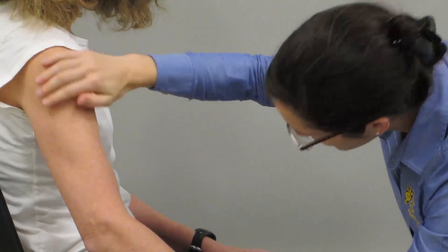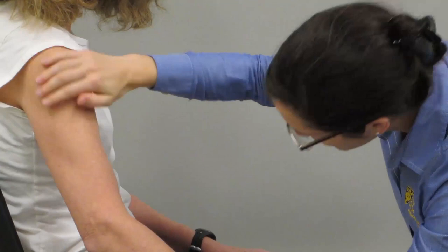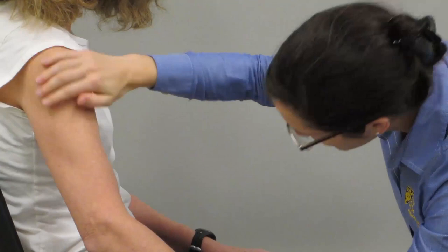Manually resist elbow extension to locate the central point of the bulk of the muscle belly of the lateral head of the triceps and denote this location for EMG sensor placement. Prepare the skin by removing dead skin cells.